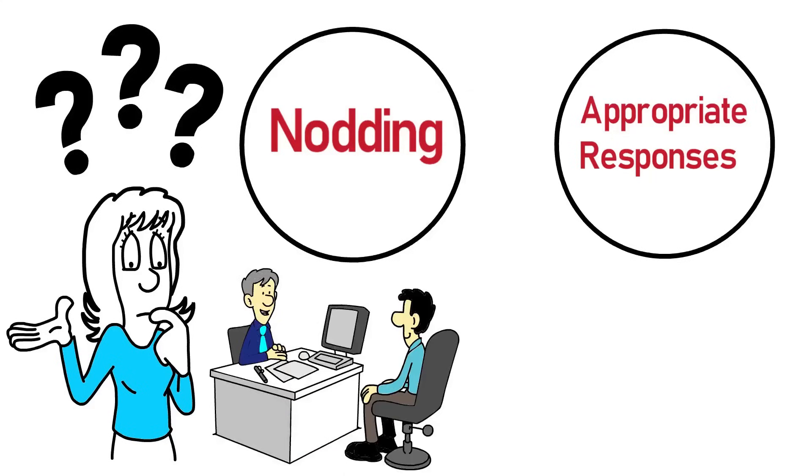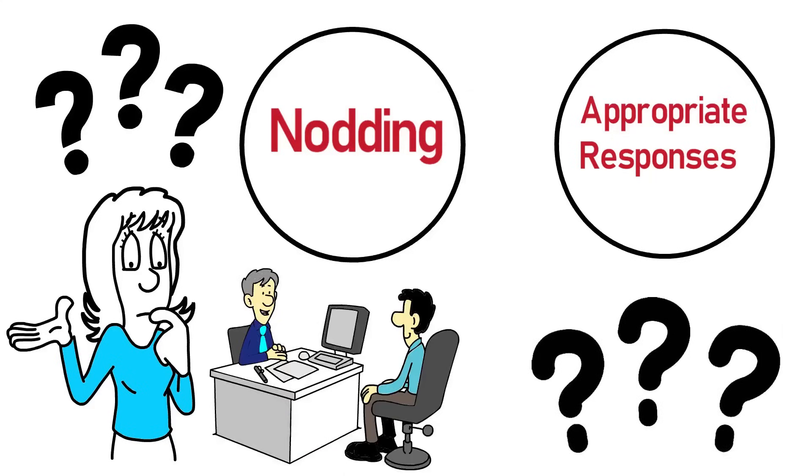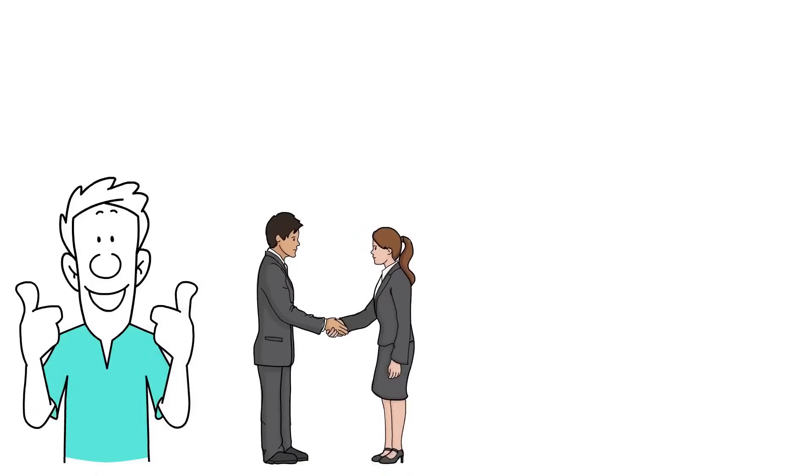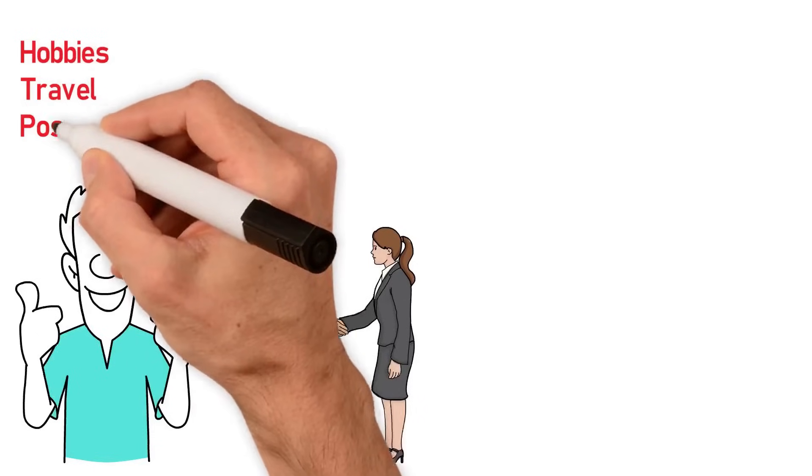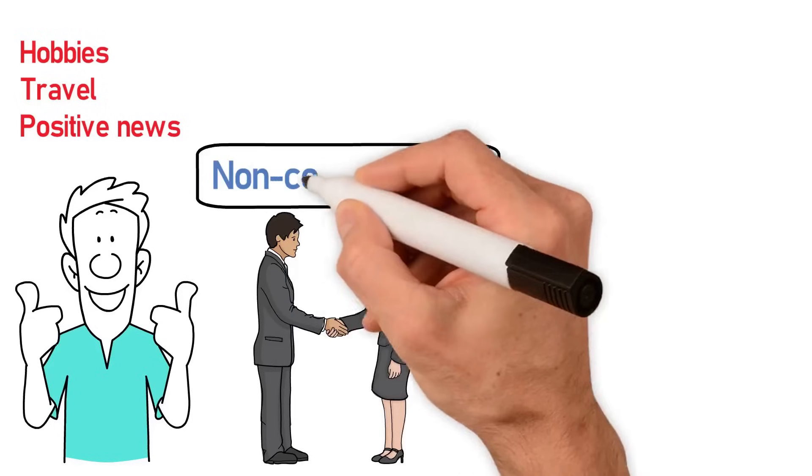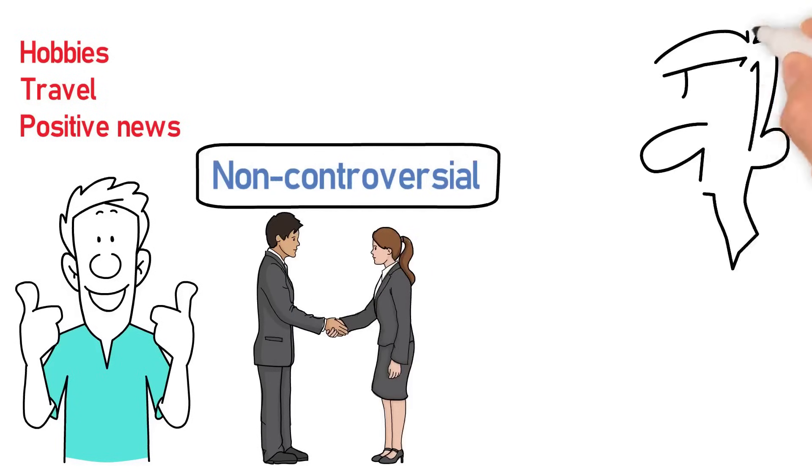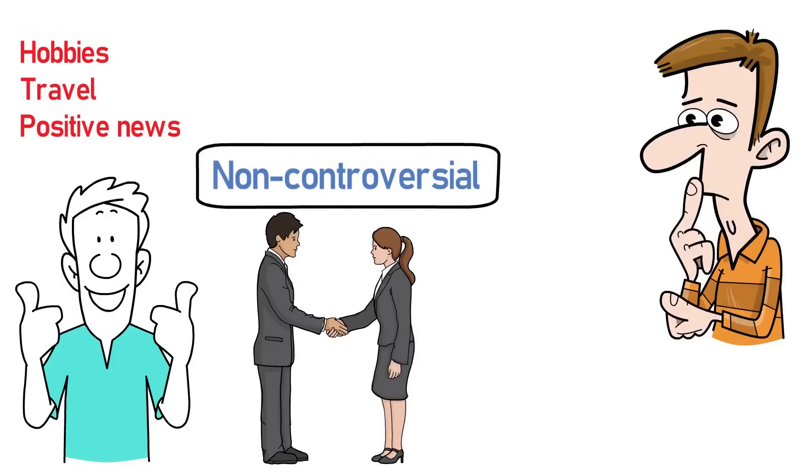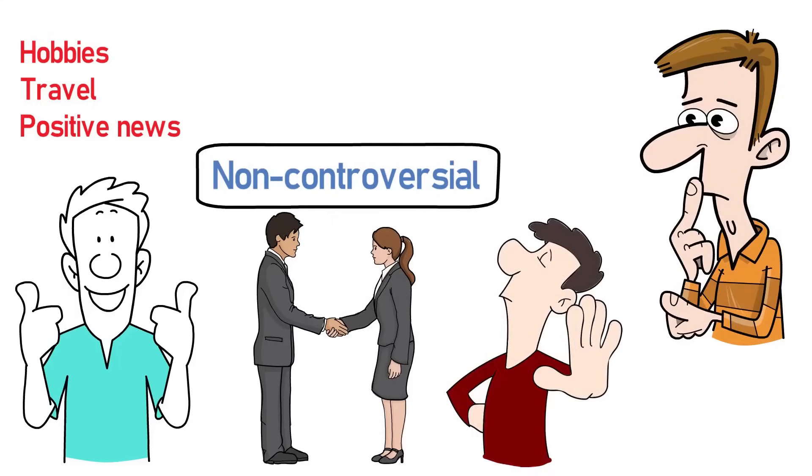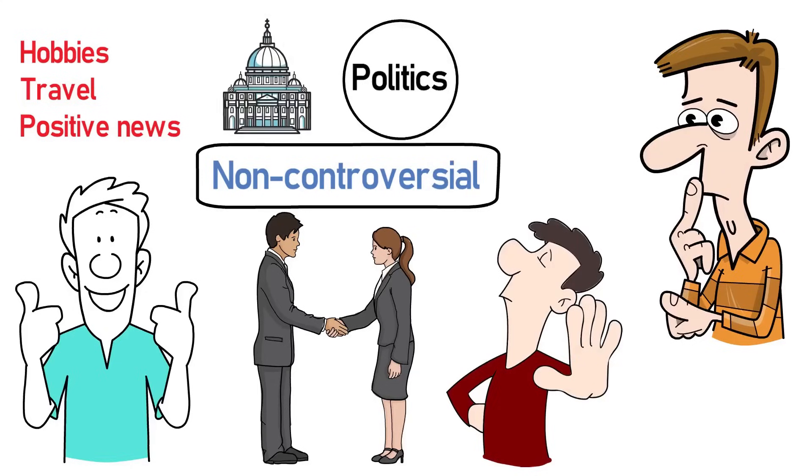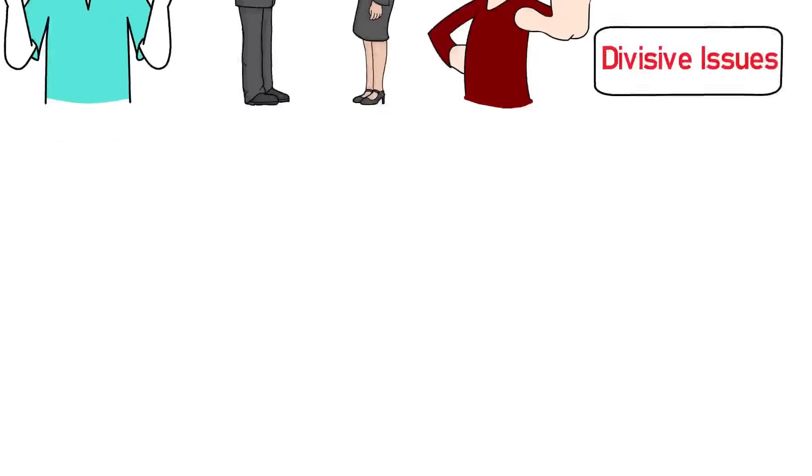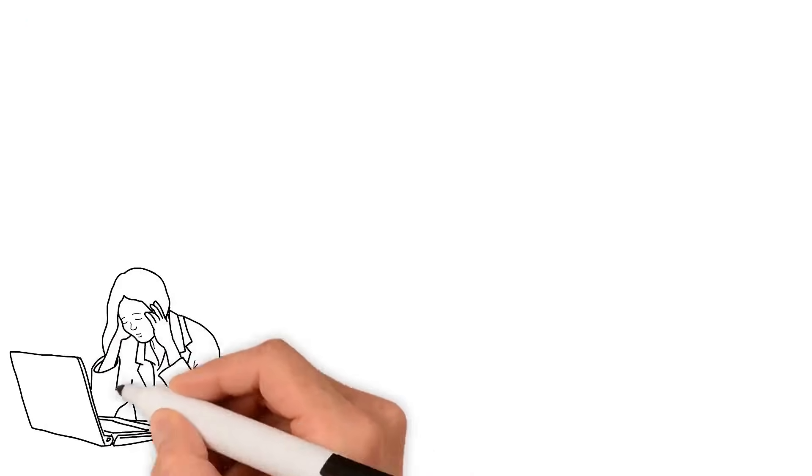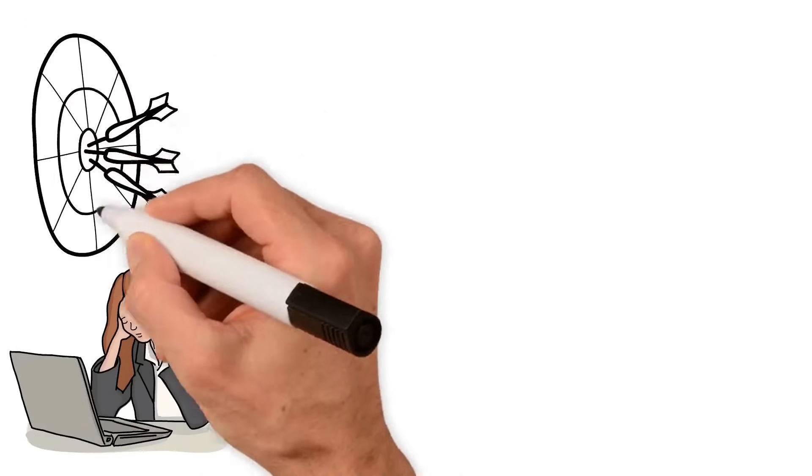Navigating the waters of small talk also involves knowing which topics to embrace and which to avoid. Safe topics typically include shared experiences, like the event you're both attending, hobbies, travel, and positive news. These topics are usually non-controversial and can lead to discovering mutual interests. On the flip side, topics to avoid in initial conversations include politics, religion, personal finances, and other potentially divisive issues. These can create discomfort or conflict, undermining the very purpose of small talk.